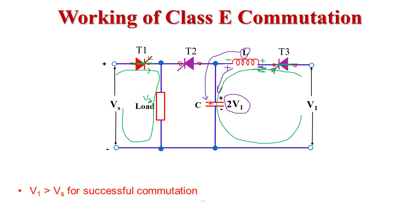Now we turn on thyristor T2 by applying a gate triggering pulse to it. When T2 turns on and behaves like a short circuit, the capacitor releases its energy through T2, through the load, and back to the capacitor. The whole capacitor voltage appears across the load, so the load voltage is now equal to 2V1. Since this terminal voltage is 2V1 and the other terminal is Vs, thyristor T1 becomes reverse biased — its cathode is at a higher potential than its anode — and T1 turns off.